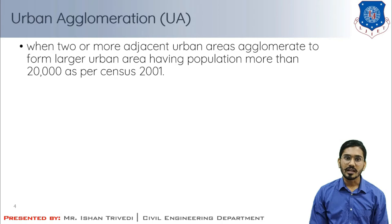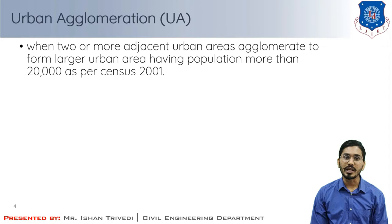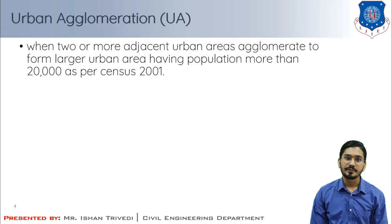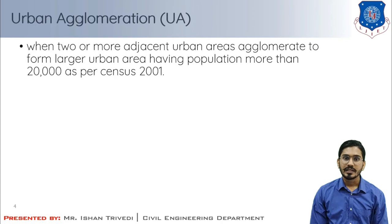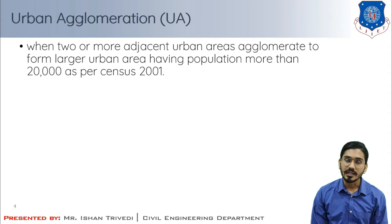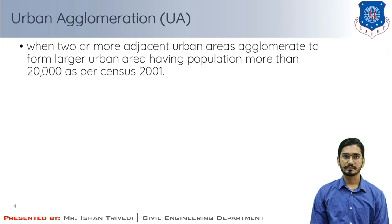Urban agglomeration occurs when two or more adjacent urban areas agglomerate to form a larger urban area having a population of more than 20,000 as per Census 2011. It is the area with or without outgrowth of such a town. An urban agglomeration must consist of at least a statutory town where the population is 5,000, satisfying basic conditions of contiguity.